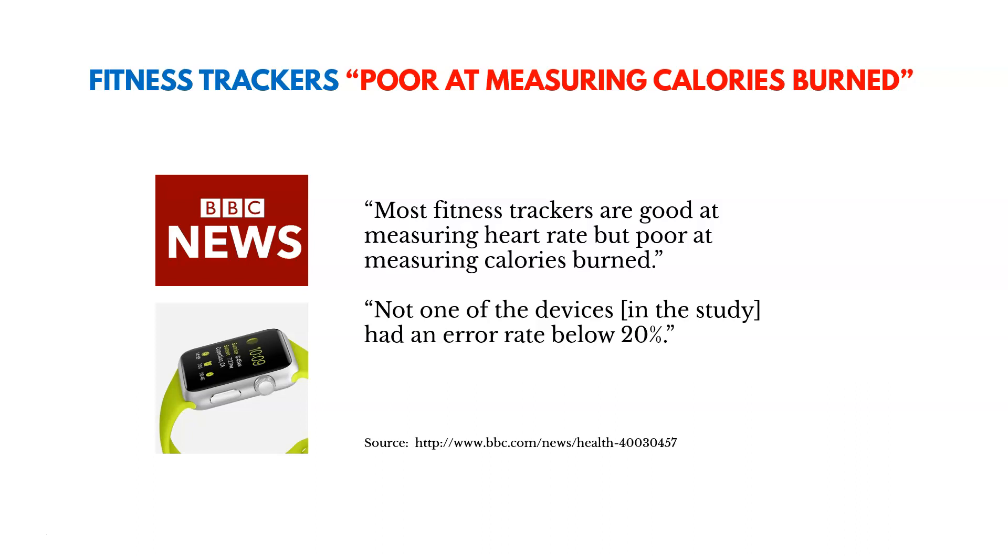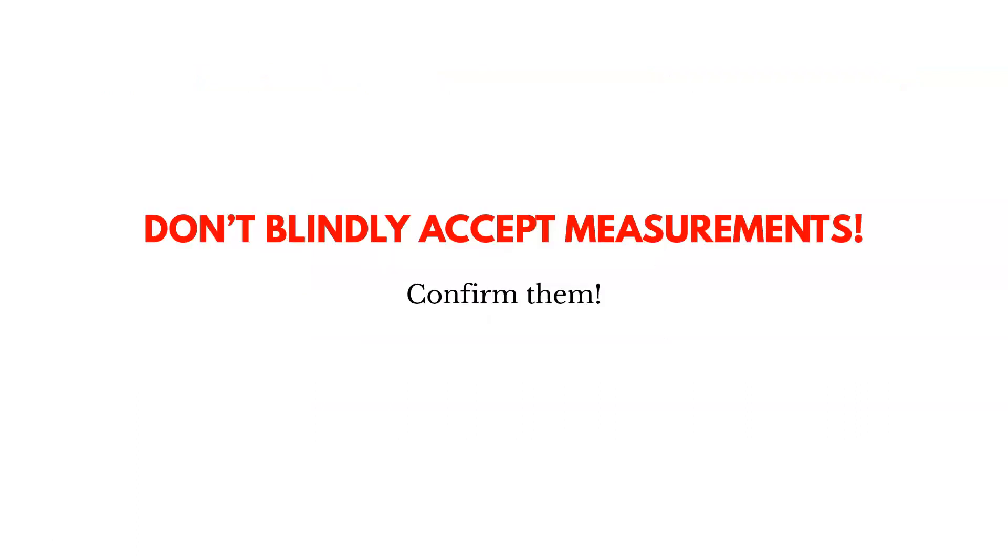So in our daily lives, people may use these watches to make process-based decisions like how much to eat, what types of food to eat, how much to exercise, and so on. But if they have bad data to make those decisions, it could cause problems. So what's important here is to not blindly accept our measurements. We have to confirm them. And so measurement systems analysis is going to help us do that to make sure we're getting good measurements.